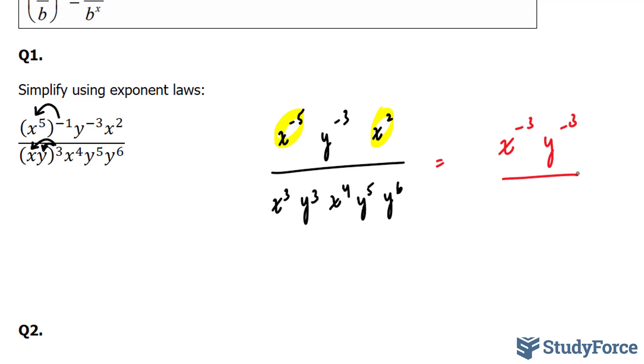And at the bottom, we'll do the same thing. We'll concentrate on the x's individually, and we'll concentrate on the y's individually. So I'll add all the exponents for the x's first. And if I do that, I have x to the power of 3 plus x to the power of 4, which is x to the power of 7.